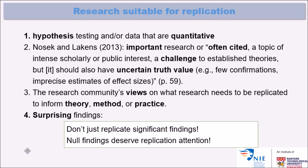According to Nosek and Laken's 2013 paper, research suitable for replication includes important studies that are often cited, topics of intense scholarly or public interest, or challenges to established theories. However, these should also have uncertain truth values — meaning there are only few confirmations of the hypothesis, or the effect sizes might be imprecise — and you want to replicate them to find whether you can achieve the same effect sizes or provide more confirmation, or perhaps refute the claim.